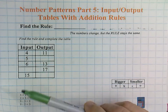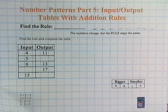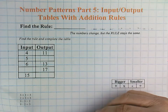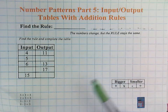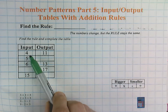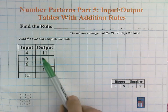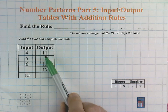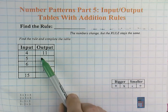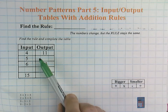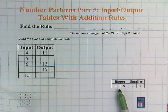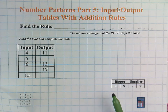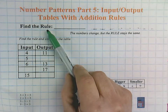An input-output table is a table of numbers that has an input column and an output column that runs up and down or in rows from left to right. The input is the number we start with and the output is what the number looks like after it has changed. It is our job to figure out what change is happening: are we adding or subtracting, multiplying or dividing, and then by how much? That is called the rule.